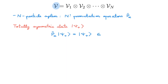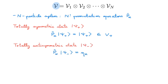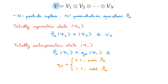Totally symmetric states live in a subspace of the full state space called V-plus. Next, let's define a totally antisymmetric state, psi-minus. If P-alpha acting on psi-minus gives eta-alpha times psi-minus for any alpha, where eta-alpha is plus 1 if P-alpha is an even permutation and minus 1 if P-alpha is an odd permutation, then psi-minus is a totally antisymmetric state. The parity of a permutation is the parity of the number of transpositions into which we can decompose it. Totally antisymmetric states live in a subspace called V-minus.